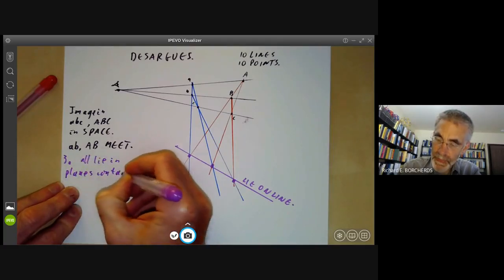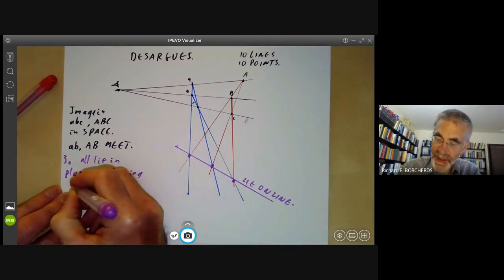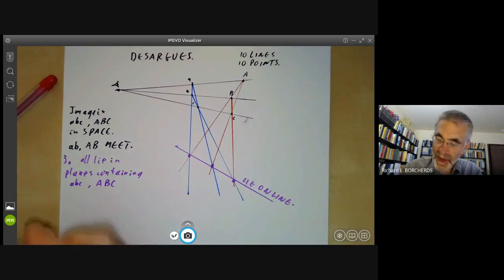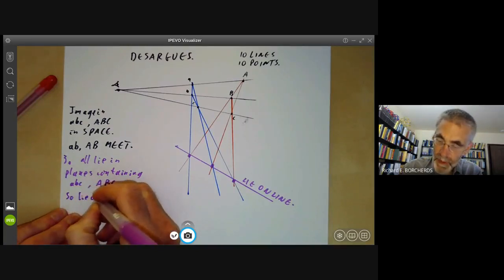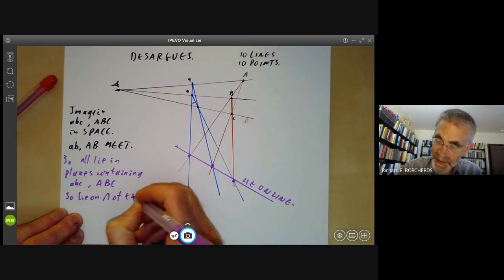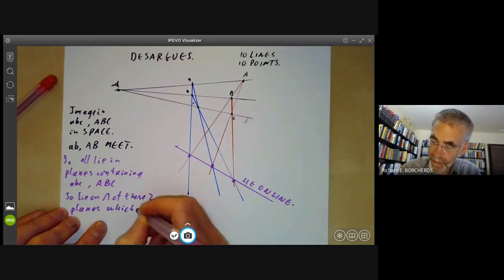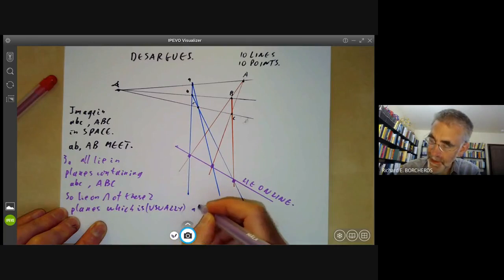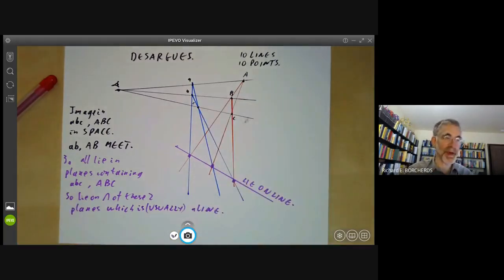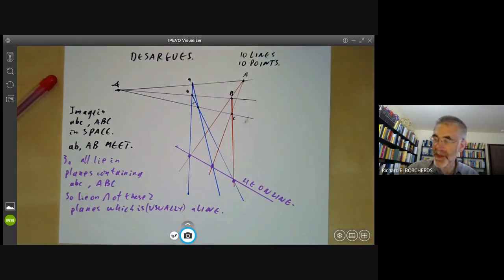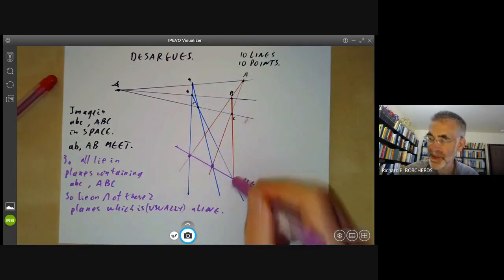And they also lie in the plane containing the triangle big ABC. So they lie on the intersection of these two planes, which is usually a line. It might not be a line because the two planes might be the same just by accident. But if you choose these two planes in generic position, then that intersection will be a well defined line. So all these three points lie on a line.